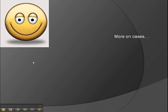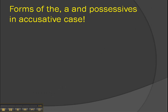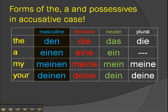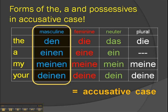Welcome back to our series on cases. Today we're going to have a look at the accusative case. So how do those forms of 'the' and the possessive adjectives go in the accusative case? How does this table look different to the nominative table that we looked at before? That's it — only the masculine ones have changed, and that's all that's different about these forms. So watch out for masculine ones.